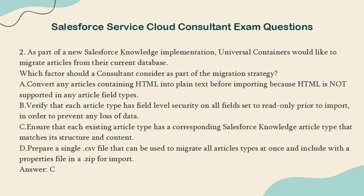D. Prepare a single .csv file that can be used to migrate all article types at once and include it with a properties file in a .zip for import. Answer: C.